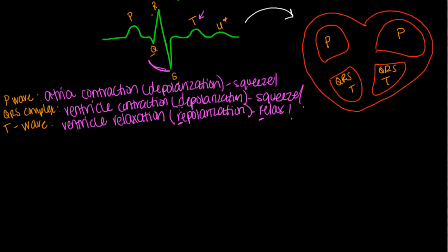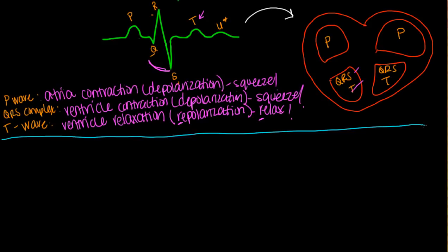So those are our basics. P belongs to the atrium, representing atrial activity. QRS belongs to our ventricles. T belongs to our ventricles as well — one representing the squeeze and one the relax. One thing I used to ask is: how come you can see the ventricles relax, but you never see the atria relax? The atria do relax, but you don't see it clearly on an ECG tracing because the QRS complex is so large it overtakes what you would see. Now let's talk about the electrical conduction of the heart and those popular heart rhythms.